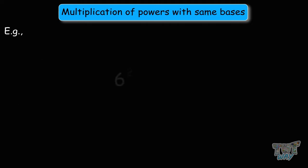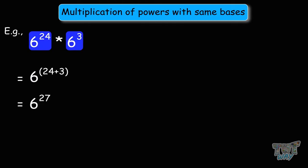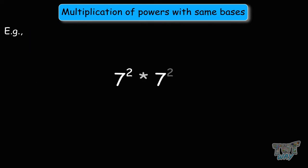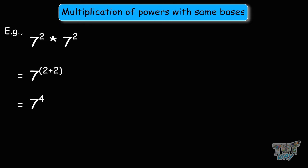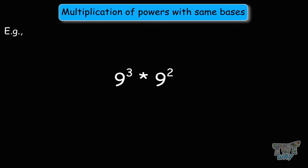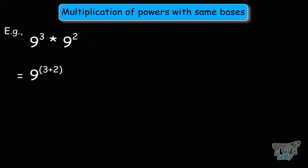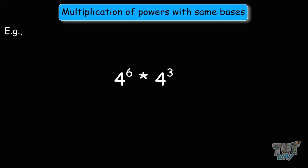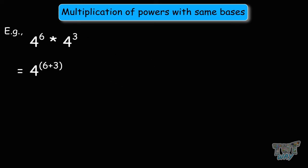More examples: 6 to the power of 24 times 6 to the power of 3 equals 6 to the power of 27. 7 squared times 7 squared is 7 to the power of 4. 8 to the power of 4 times 8 to the power of 2 equals 8 to the power of 6. 9 to the power of 3 times 9 to the power of 2 equals 9 to the power of 5. 4 to the power of 6 times 4 to the power of 3 equals 4 to the power of 9. We have the same bases and are adding the exponents during multiplication.